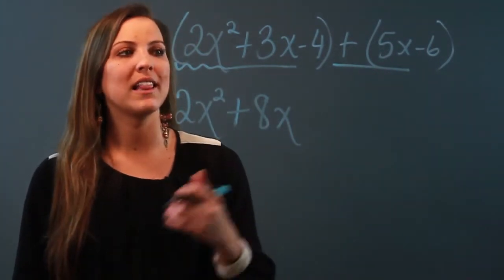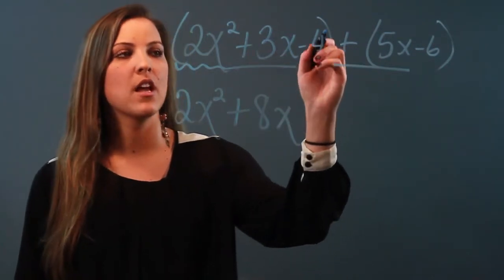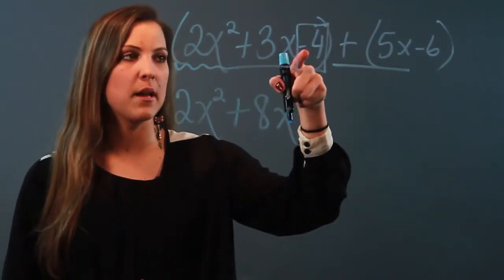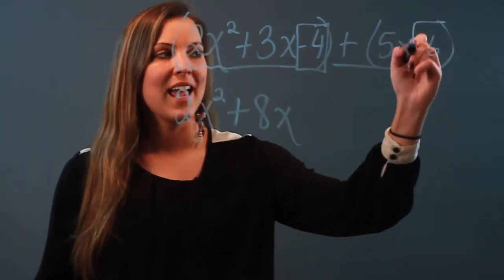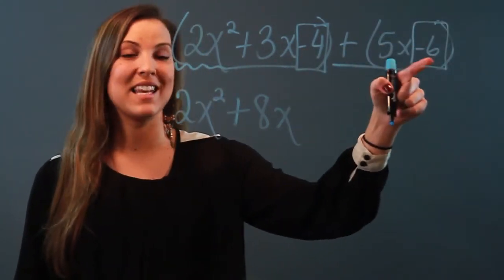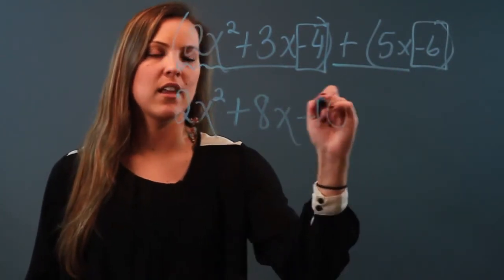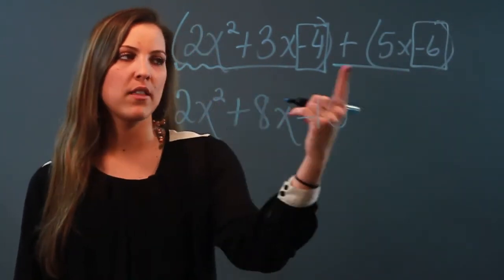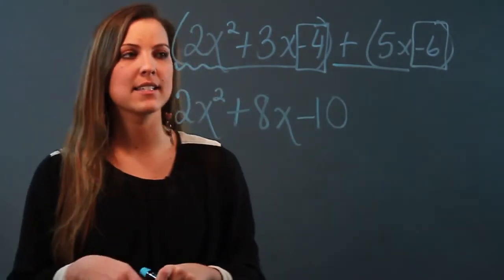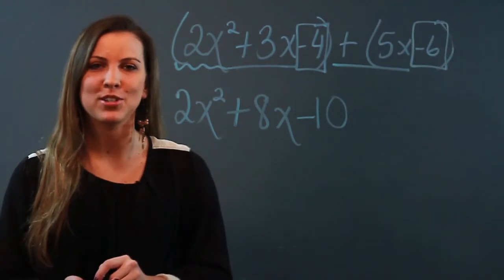Like terms also consist of constants — any numbers are always like terms. So this is negative 4; it's important to carry the sign before it. Plus negative 6. And negative 4 plus negative 6 is negative 10. So when you combine this polynomial with this one, you get 2x squared plus 8x minus 10. And that is how you combine polynomial expressions.